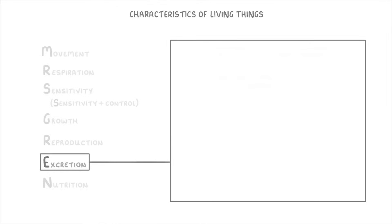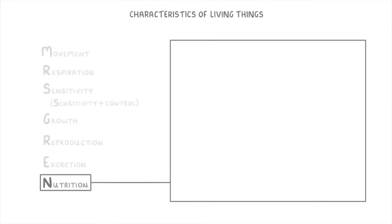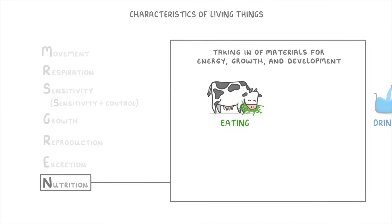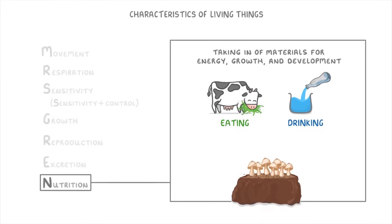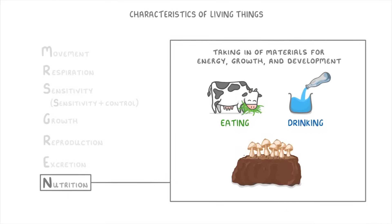Finally, the last feature is Nutrition, which is the taking in of materials for energy, growth, and development. For most animals that basically means eating and drinking to get all the nutrients and energy we need, whereas for a fungi or bacteria it means absorbing nutrients from the surroundings by either diffusion or active transport.